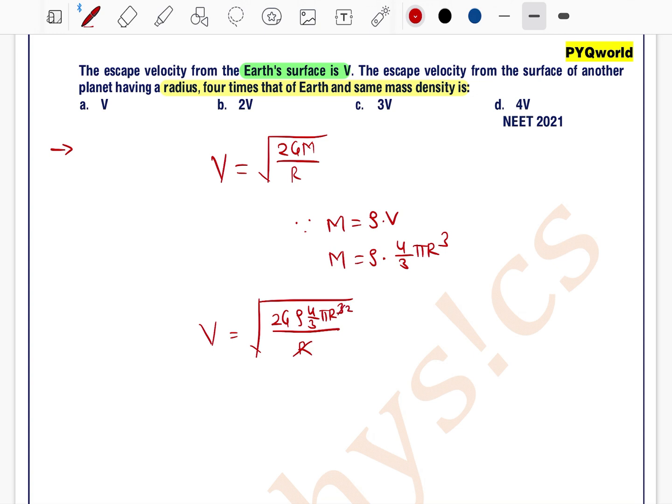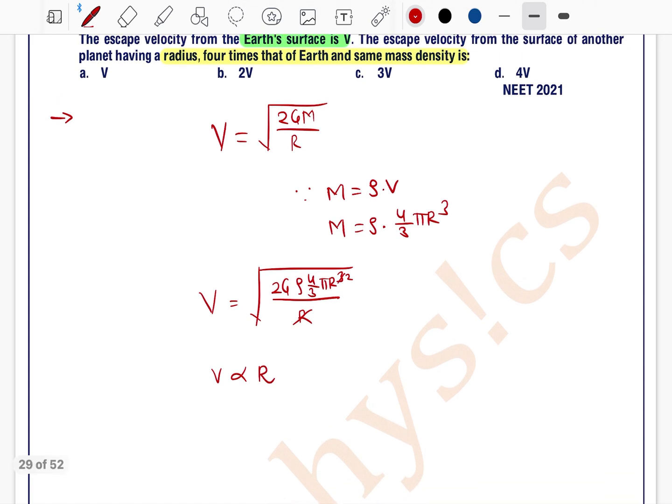Now see 2 g rho 4 by 3 pi everything is constant. If you take r square out of this square root so we can write velocity directly proportional to radius.